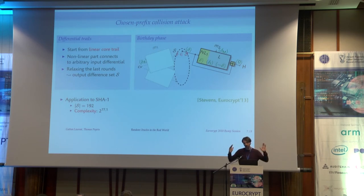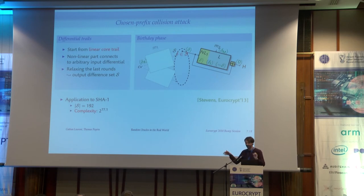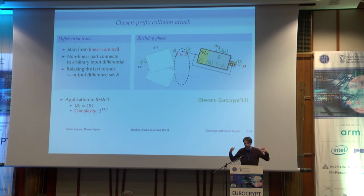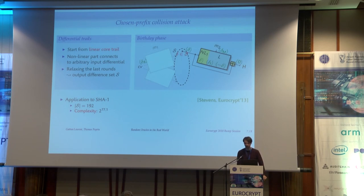What you do is start from a differential trail, look at a set of nice differences, then do a birthday step to get into this set, and then use a near-collision block. Because of the feedforward, it's going to cancel out. The important thing is you start from a nice linear trail, then prepend a non-linear trail and connect from some arbitrary difference, and at the output you relax a little bit to try to have several values. This was done on SHA-1 by Marc Stevens in 2013, with a set of 192 possible differences, giving an attack complexity of 2^77.1 — not a huge gap from the generic attack at 2^80.